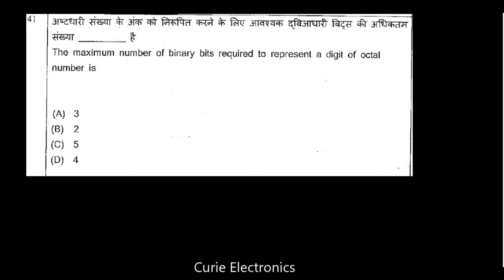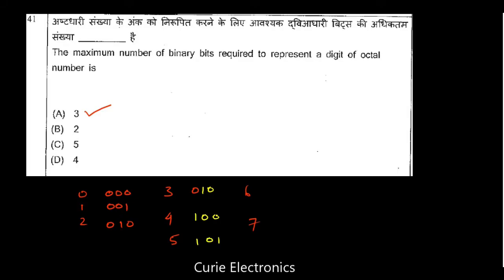Question number 41: The maximum number of binary bits required to represent a single digit of the octal number system. Octal digits go from 0 to 7. To represent 0 through 7, we need only 3 bits — for example, 7 is represented as 111. So we need only 3 bits.